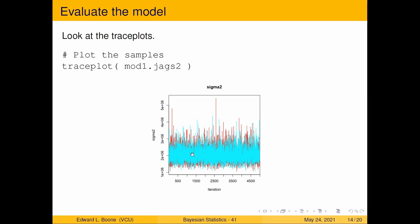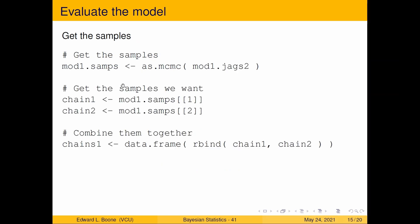I'm staring at this, I'm thinking man it's not so bad. So how good is it? Well to do this we need to peel off from mod one jags two the samples. Once we have those samples we're going to break each chain so that we have them and then we're going to combine them back together into a data frame because data frames are easy to use. This whole bit here is to get our data from an mcmc object into a data frame that we can use.